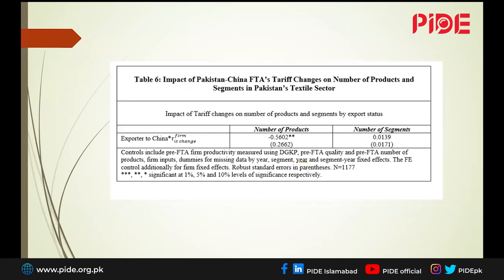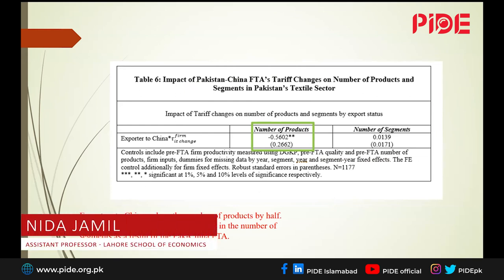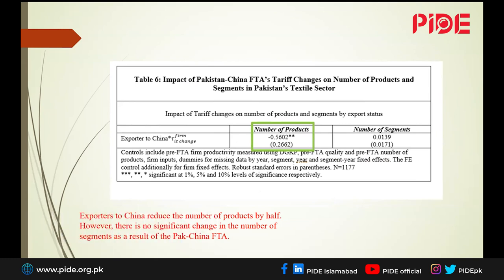What about the products firms are offering? Are they increasing their product range? We find that firms exporting to China actually lower their products by half. They're not producing more products. This points to the idea that Pakistani products within the Chinese market — although tariffs have gone down — Pakistani firms are actually reducing their number of products. This points to the fact that Pakistan faces a lot of competition within Chinese markets: in the Chinese market, we don't just have Pakistani products but products from ASEAN countries from all over the world.